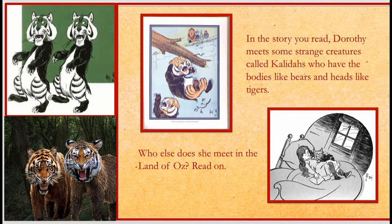When Dorothy travels with her friends to the Emerald City along the Yellow Brick Road to meet the Great Wizard of Oz, she encounters the Kalidas. The Kalidas wanted to attack Dorothy and her friends, but they faced them bravely and in the end the Kalidas fell into a ditch and died. That is how they won.